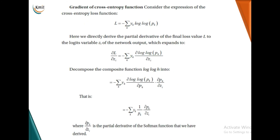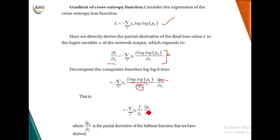For the cross entropy loss function, we calculate the partial derivative with respect to the logit variable z_i. Decomposing it, we multiply and divide by dou p_k to put it in a proper format. This gives us 1 over p_k times dou p_k by dou z_i. This term dou p_k by dou z_i is the partial derivative of the softmax function, which we just evaluated.